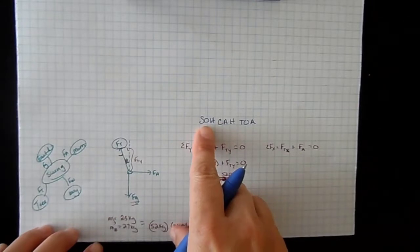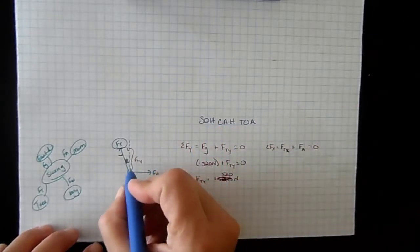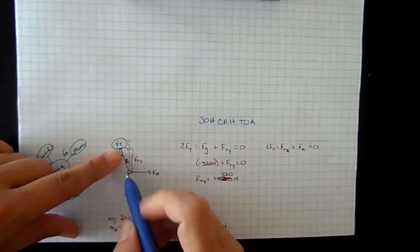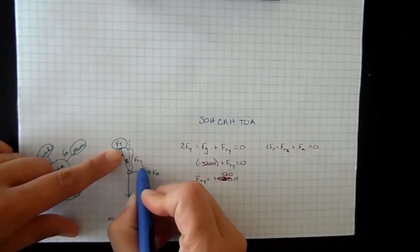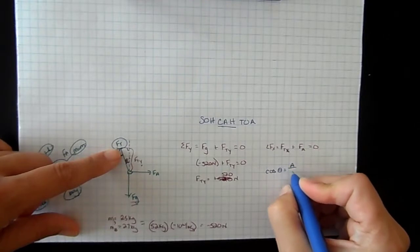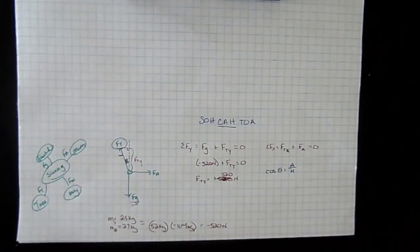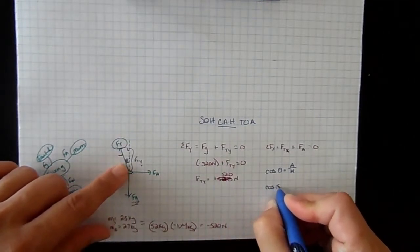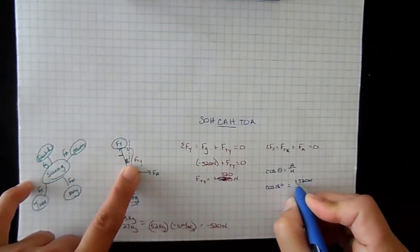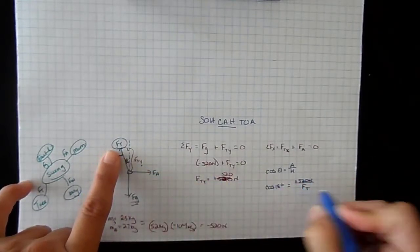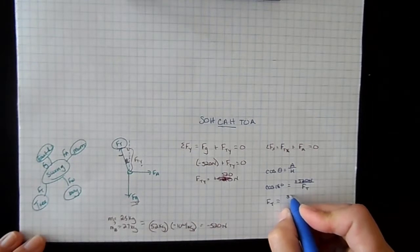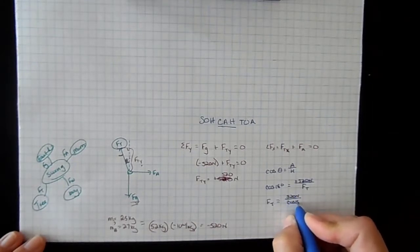Remember SOH-CAH-TOA: sine is opposite over hypotenuse, cosine is adjacent over hypotenuse. We're trying to find the hypotenuse, which is the tension force itself. We know the adjacent side — the y component — so we use cosine. The cosine of angle theta equals the adjacent leg divided by the hypotenuse. Our angle is 18 degrees and our adjacent leg is 520 newtons.